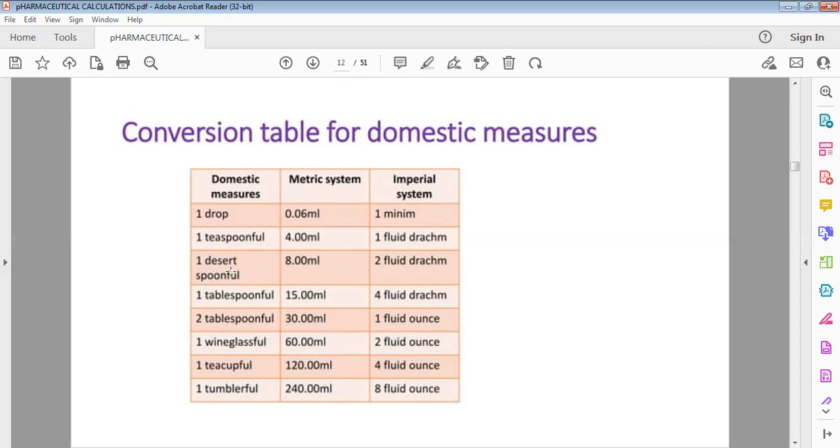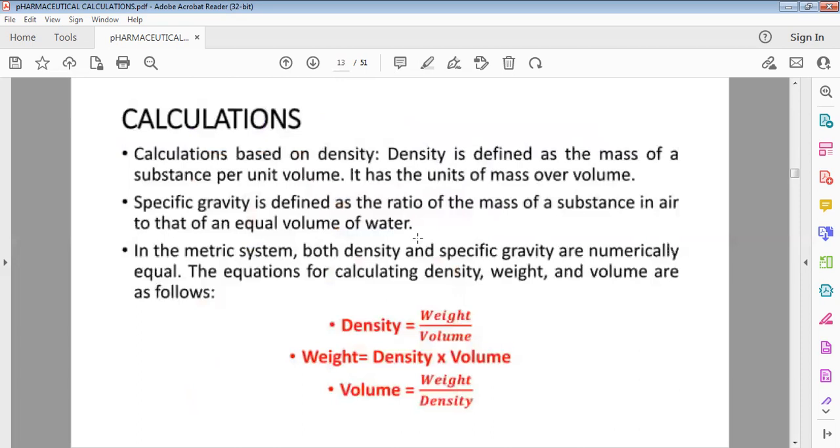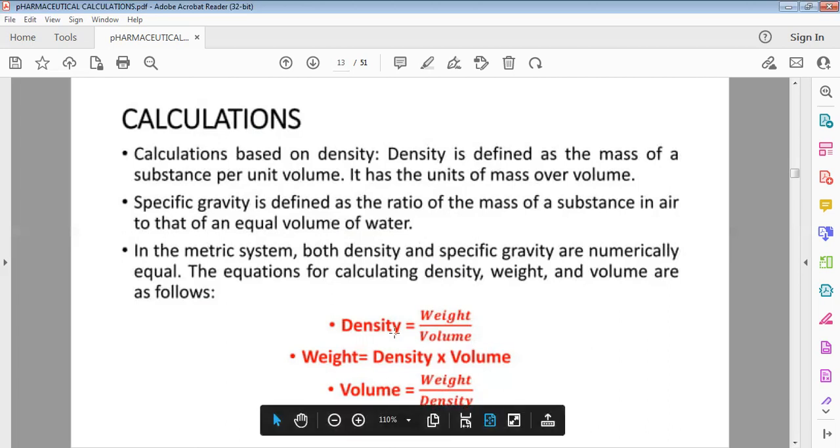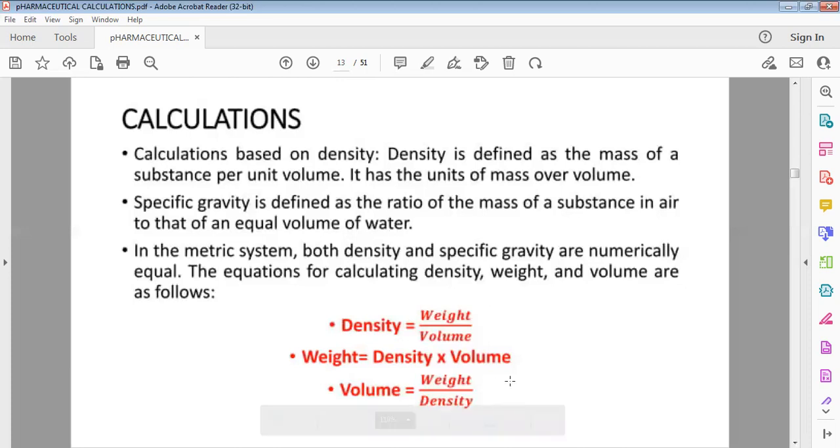Calculations based on density. Density is the mass of a substance per unit volume. It has units of mass over volume. Density is equal to weight by volume, D equals W by V. Specific gravity is defined as the ratio of mass of a substance in air to the equal volume of water. In metric system, both density and specific gravity are numerically equal. Equations for calculating density, weight and volume are as follows: Density equals weight by volume. Weight equals density into volume. Volume equals weight by density.